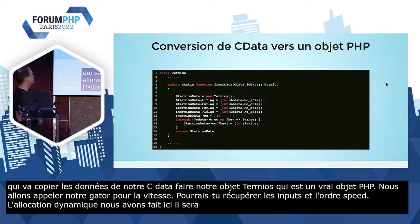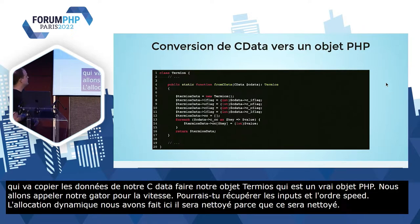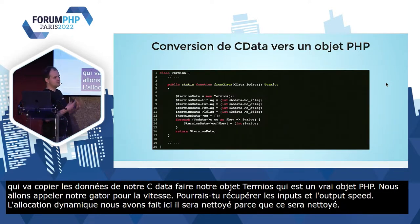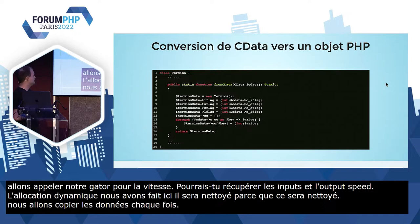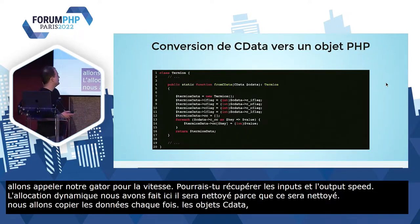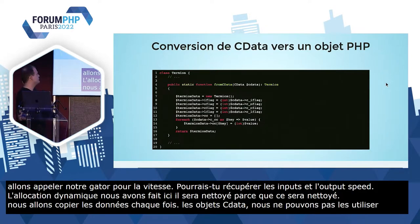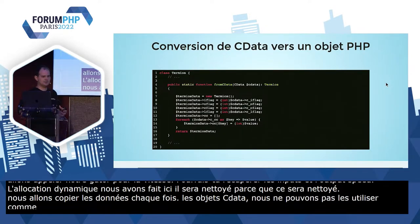Pour la conversion d'un CData vers un objet Termios, c'est quelque chose d'assez simple : on va juste copier les données à chaque fois. On est obligé de faire un cast ici parce que les objets de type CData n'ont pas forcément tous les comportements d'une variable PHP classique. Même si ça contient un tableau, vous n'allez pas forcément pouvoir faire des boucles foreach dessus.